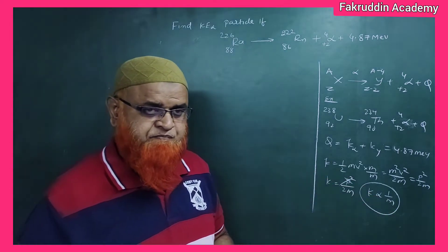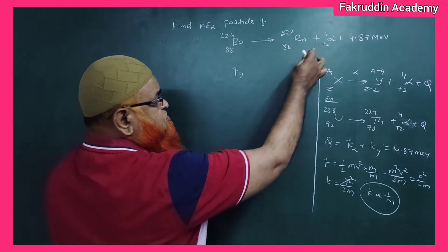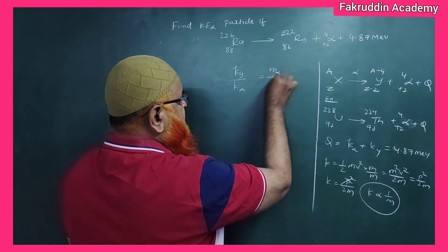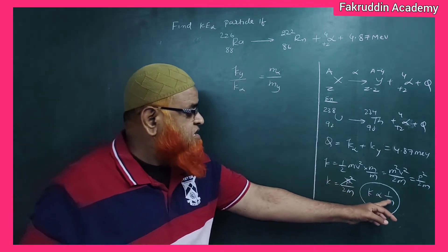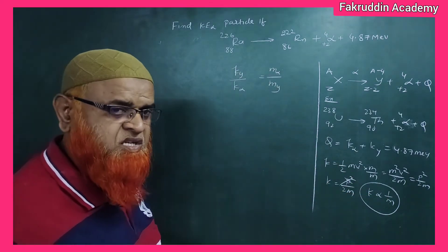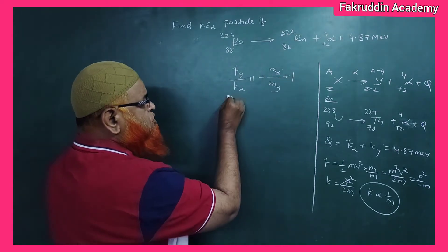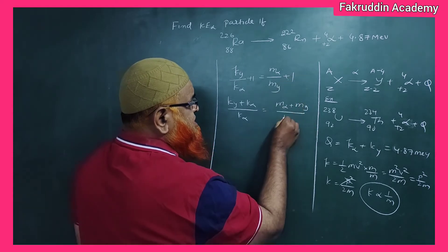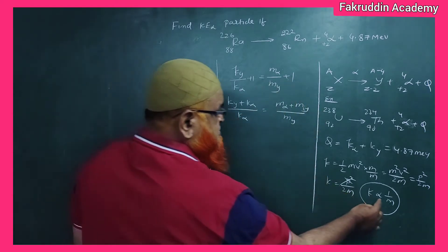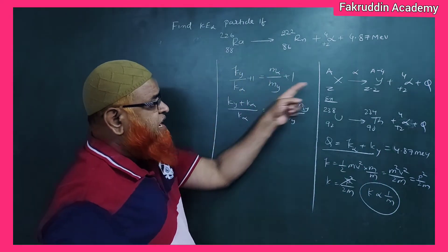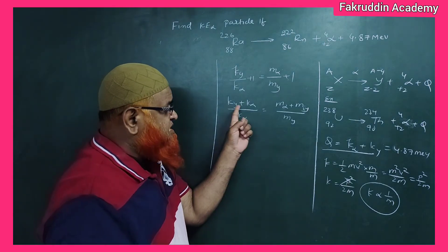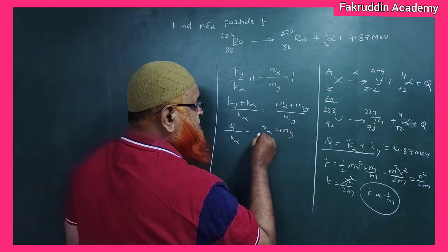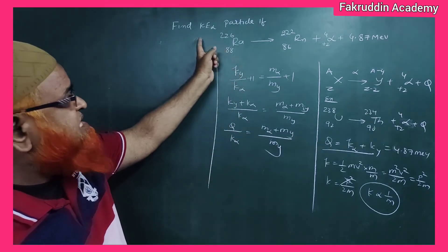Since KE = P²/2M and momentum is conserved, kinetic energy is inversely proportional to mass. Therefore, KE(daughter)/KE(alpha) = mass(alpha)/mass(daughter). Adding one to both sides gives: [KE(daughter) + KE(alpha)] / KE(alpha) = [mass(alpha) + mass(daughter)] / mass(daughter). The numerator on the left is Q, so Q/KE(alpha) = [mass(alpha) + mass(daughter)] / mass(daughter).